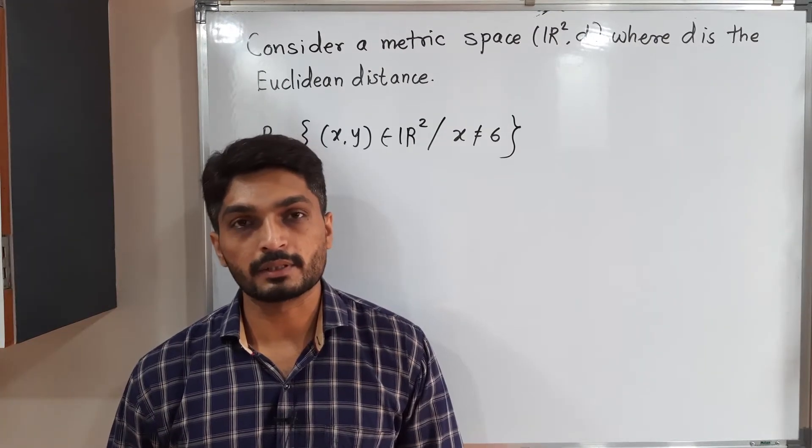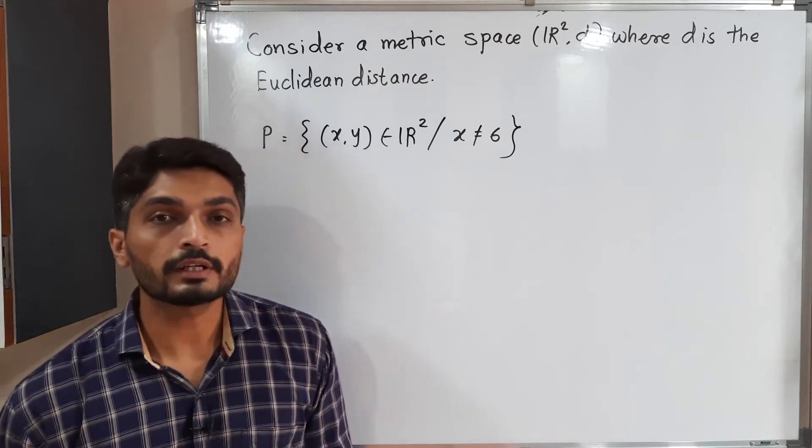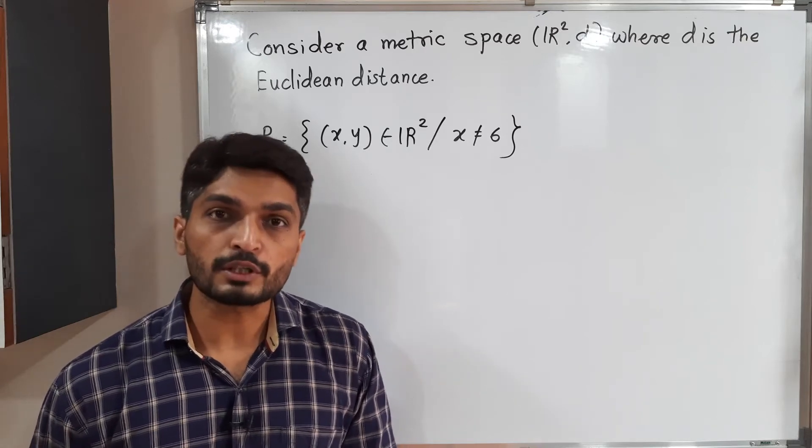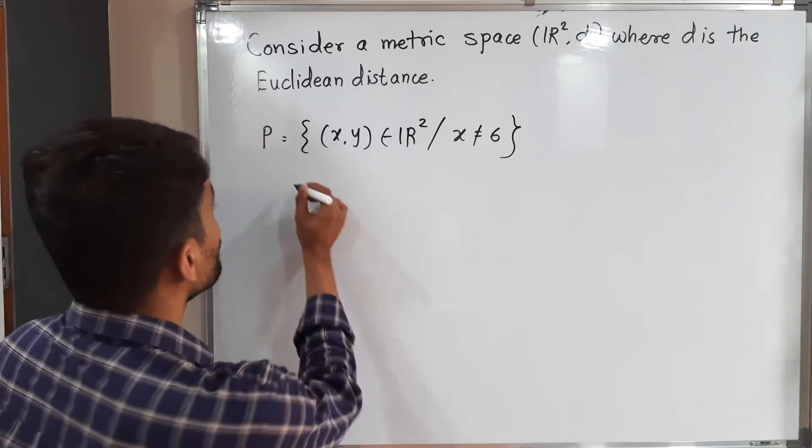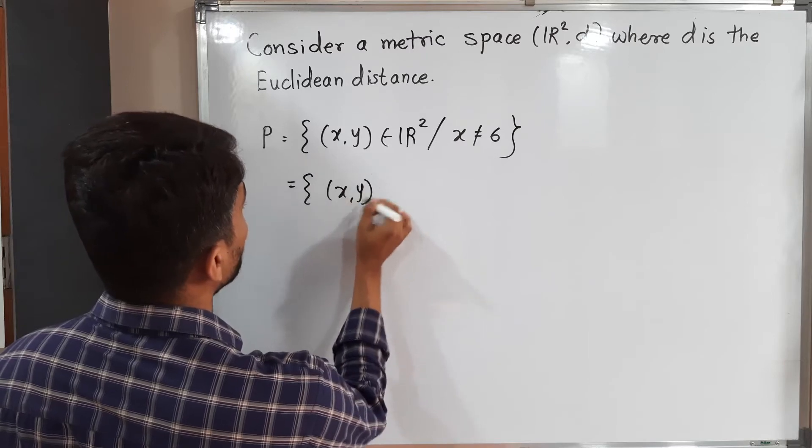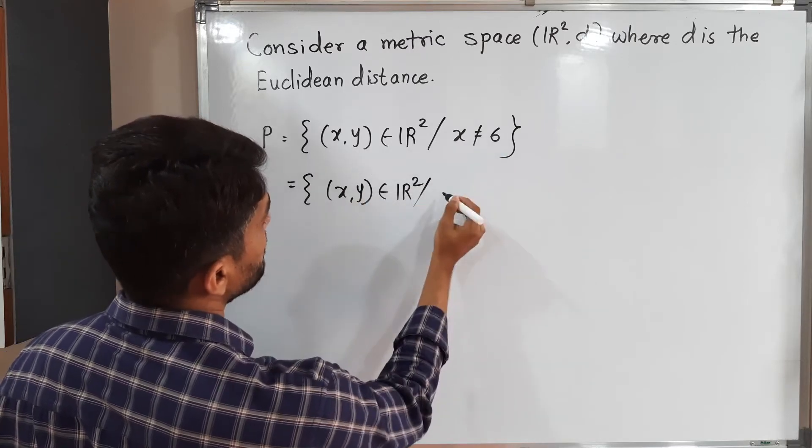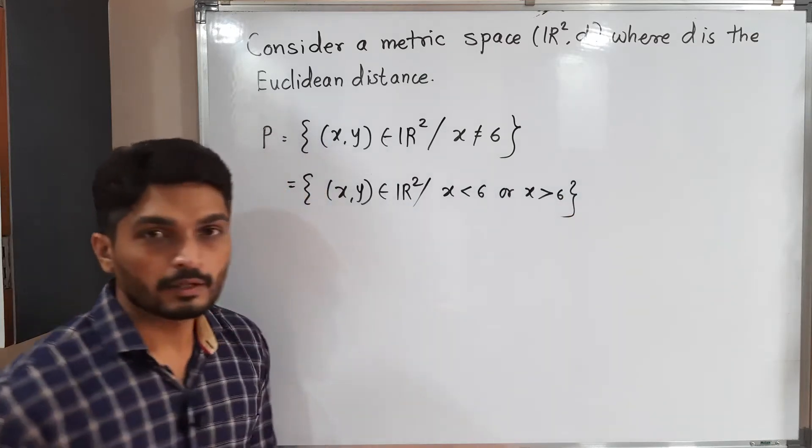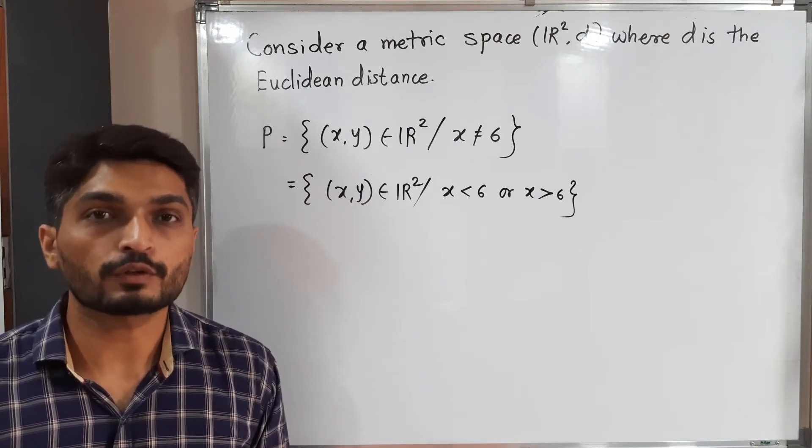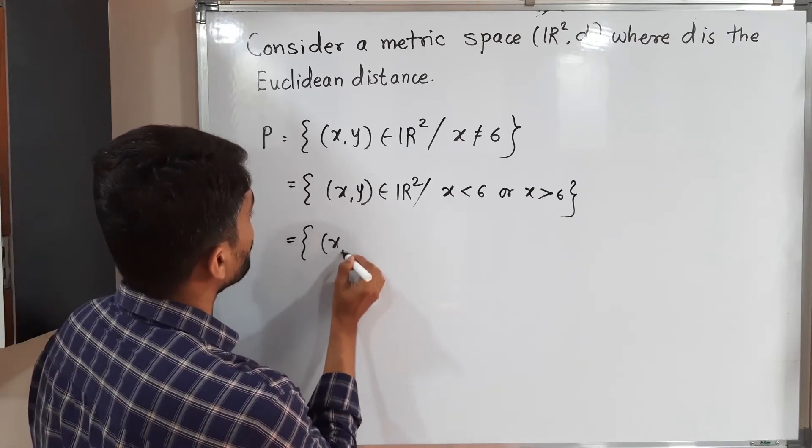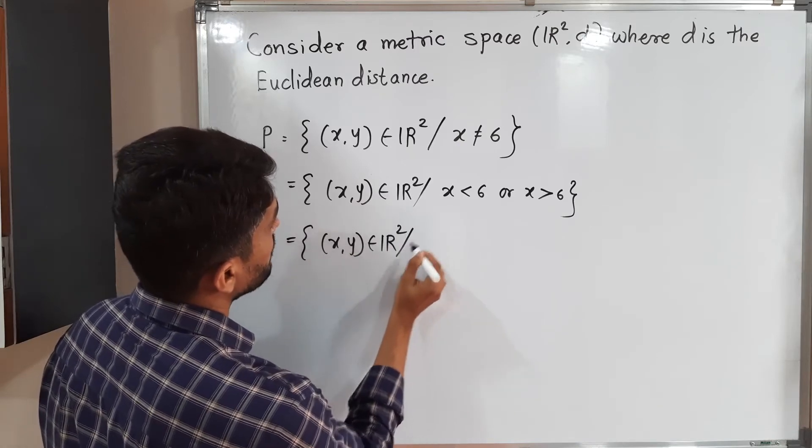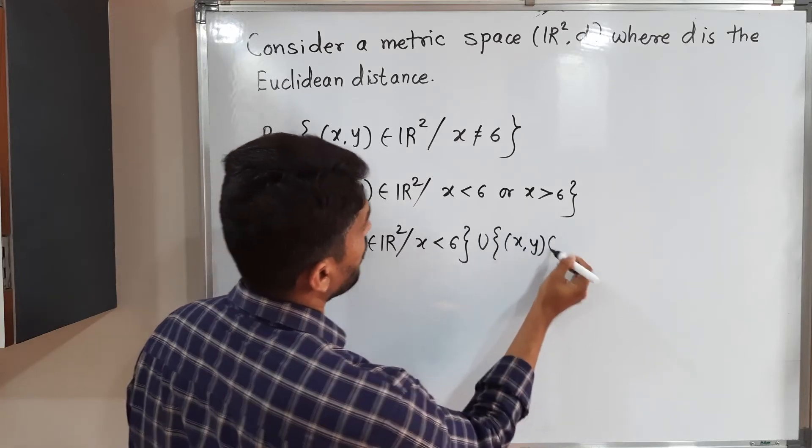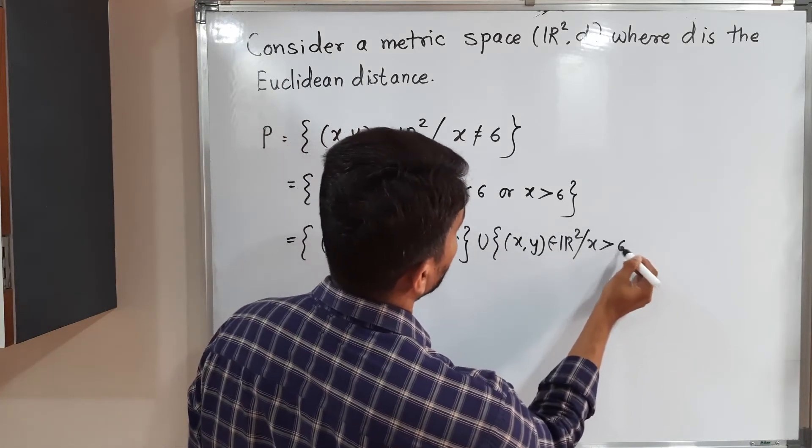Let us discuss this example. In this example, they are given a set P which contains all elements of R² such that the x component is not equal to 6. The same condition we can write in this way: x < 6 or x > 6. We can express it as a union of two sets: {(x,y) ∈ R² : x < 6} union {(x,y) ∈ R² : x > 6}.